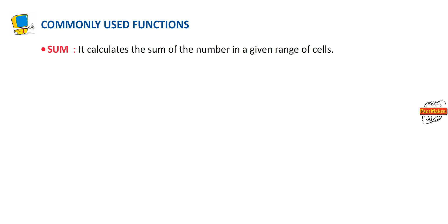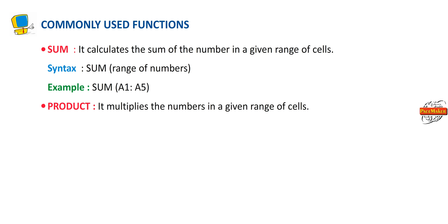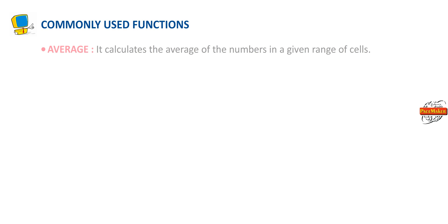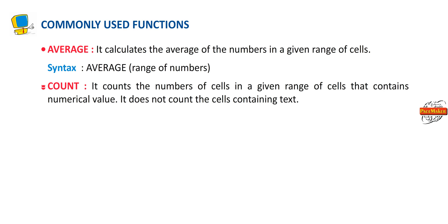Commonly used functions: SUM — calculates the sum of numbers in a given range of cells. Syntax: SUM(range of numbers). Example: SUM(A1:A5). PRODUCT — multiplies the numbers in a given range of cells. Syntax: PRODUCT(range of numbers). QUOTIENT — returns the quotient when a number is divided by another number. Syntax: QUOTIENT(numerator, denominator). AVERAGE — calculates the average of numbers in a given range of cells. Syntax: AVERAGE(range of numbers). COUNT — counts the number of cells in a given range that contain numerical values and doesn't count cells containing text. Syntax: COUNT(range of numbers).